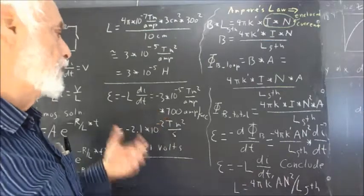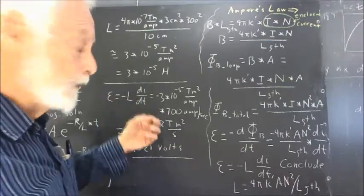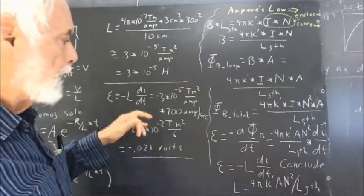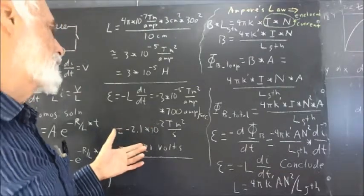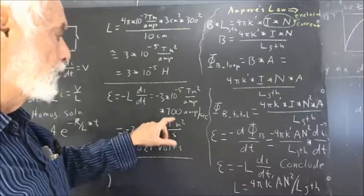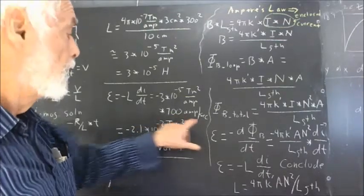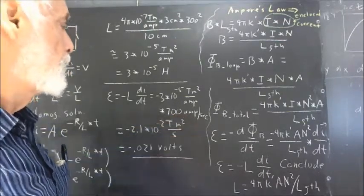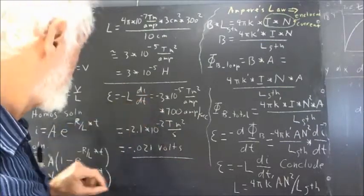And if the current is even as little as 3 amps, 3 amps change in 1/240th of a second is around 700 amps per second. So that's a realistic rate of change of the current.